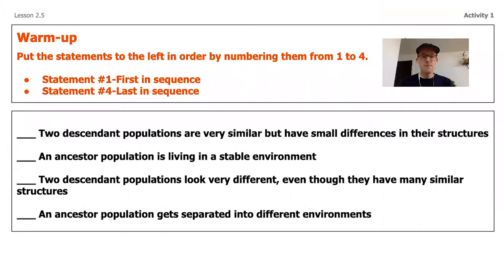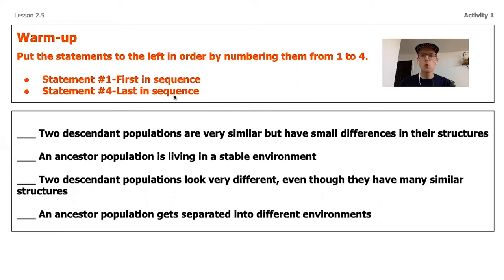We have a two-part warm-up today. For the first part, we're going to continue thinking about a timeline, but in a little bit different way. We discussed in the last lesson a little bit about evolutionary history and how evolutionary time takes place over a really long sequence of time — millions and millions of years. What we're going to be thinking about today is sequencing and putting into order the four main events that take place when organisms go through the process of evolution.